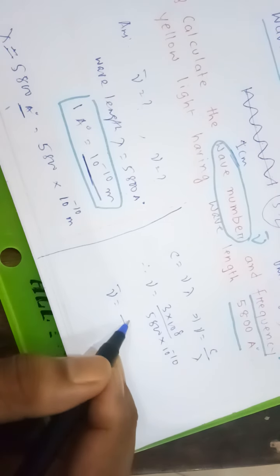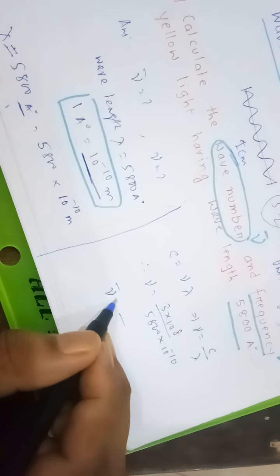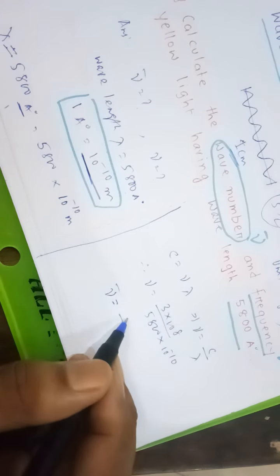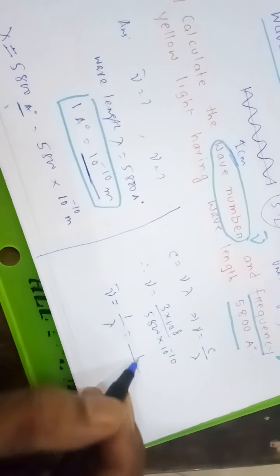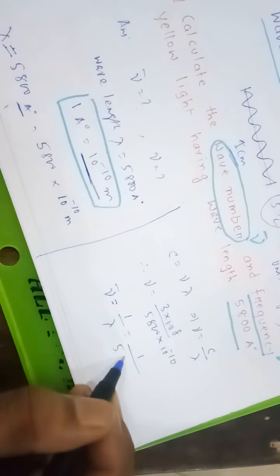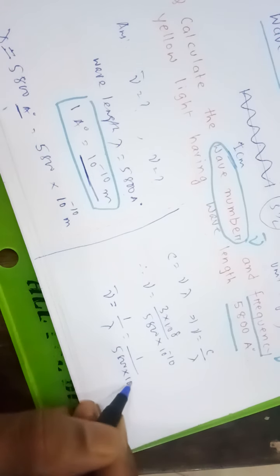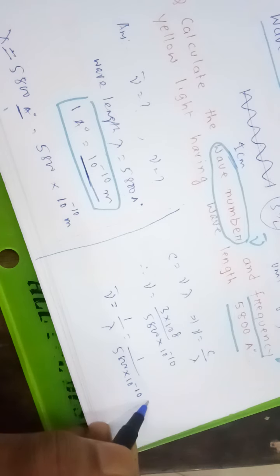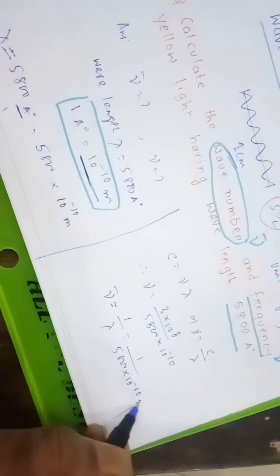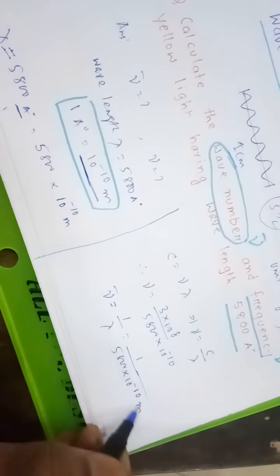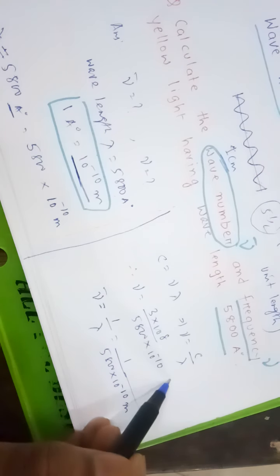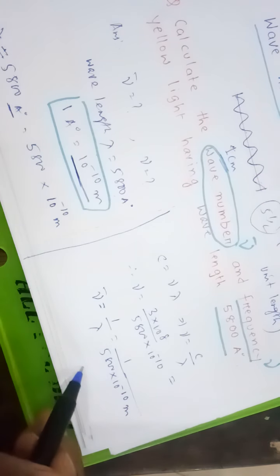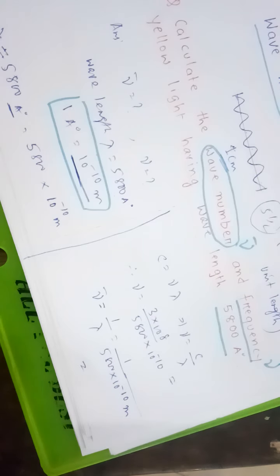For wavenumber, Nu bar equals one by lambda. So one by lambda is one divided by 5800 times 10 to the power minus 10, and the unit is metre inverse. Students, you have to calculate this value.